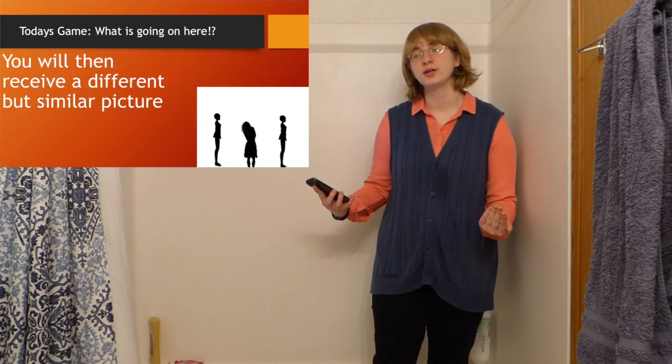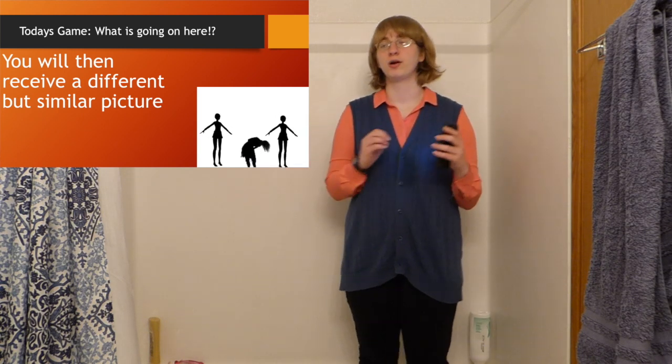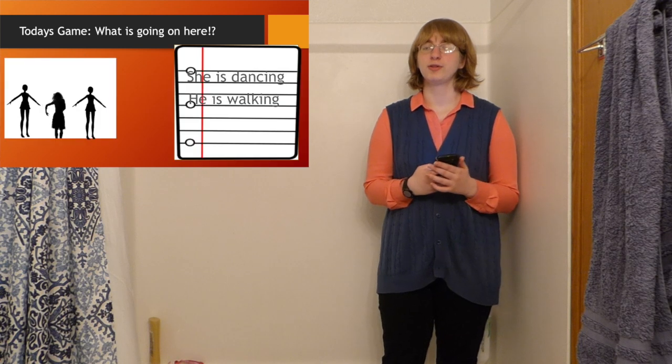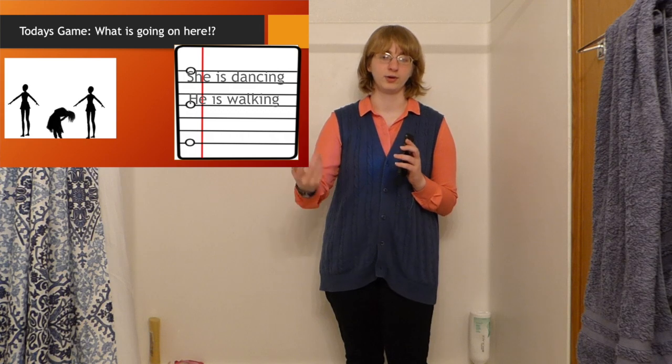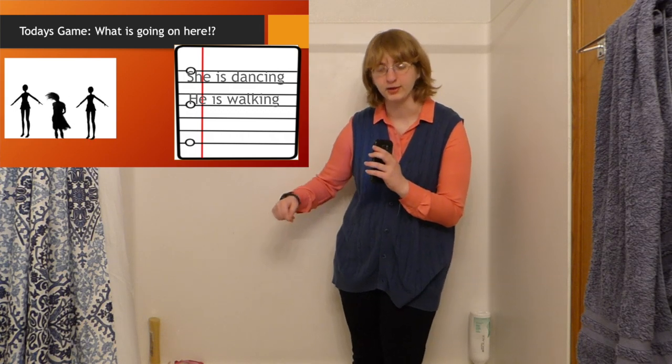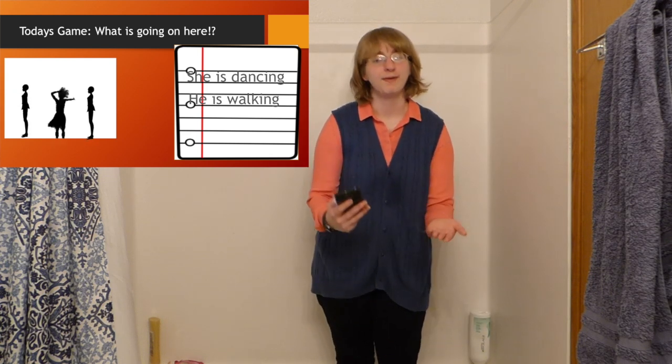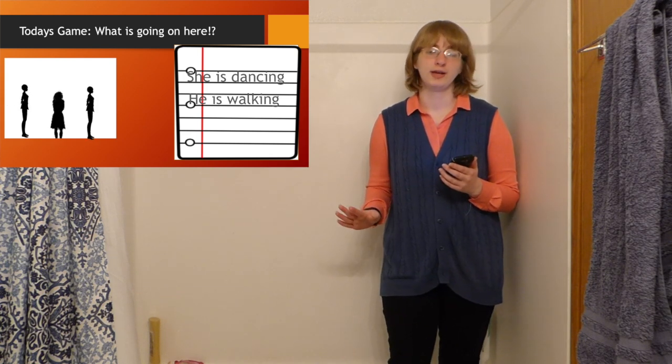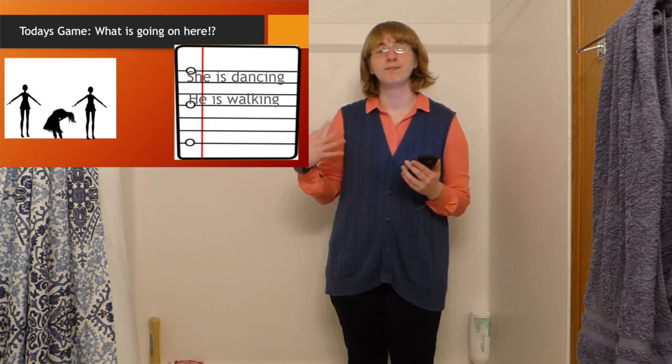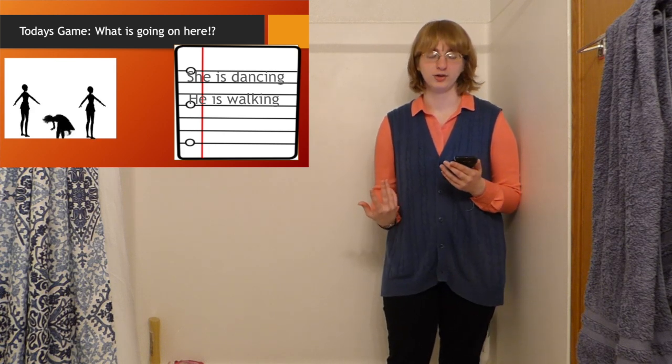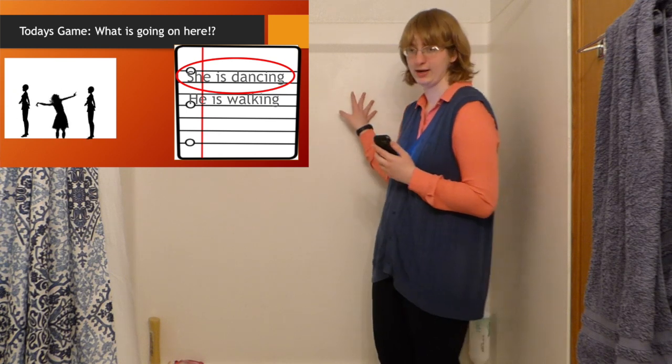Then, you will be given a similar image that will have some parts of the image that are the same and some parts that are different. You will then compare the new image and the words you have written down on the piece of paper with the image. So, in this image, we can see that there is no man walking in it. So, this means he is walking is not similar. However, both images have a dancing girl in it. So, she is dancing is what they have in common. Then, we are going to go write it on the board.